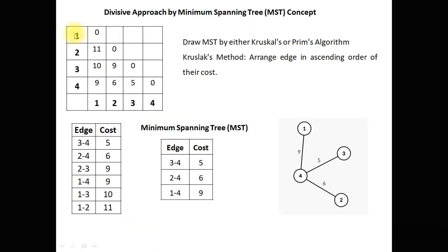Now this is a practice example having 4 vertices: 1, 2, 3, 4. We arrange the edges according to ascending order of their cost. As there are 4 vertices, 3 edges are sufficient to build the minimum spanning tree. So we take first edge 3-4 with cost 5, next we take edge 2-4 with cost 6. Next we try 2-3 but there is a formation of a loop, so we can't take this edge. After that we take edge 1-4, and in this way all 4 vertices get connected and our minimum spanning tree is built.